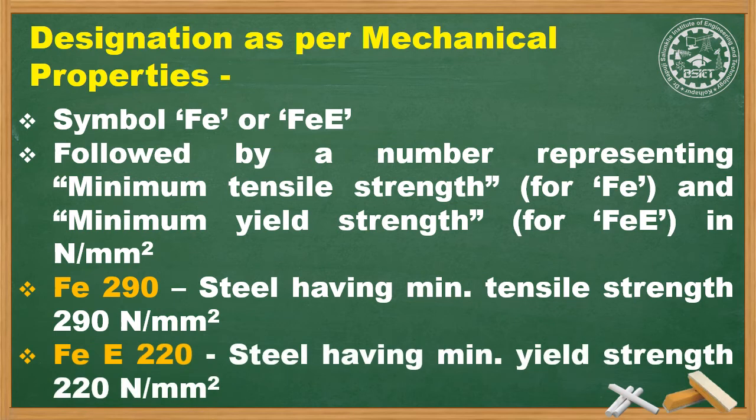Similarly, Fe220 designates a steel having a minimum yield strength of 220 Newton per mm². It is very simple.